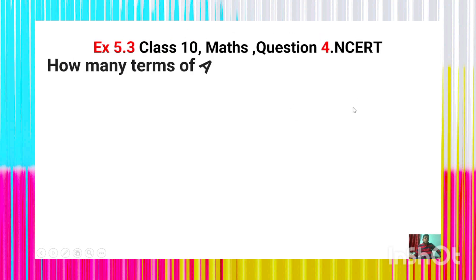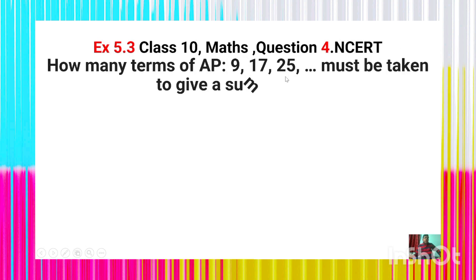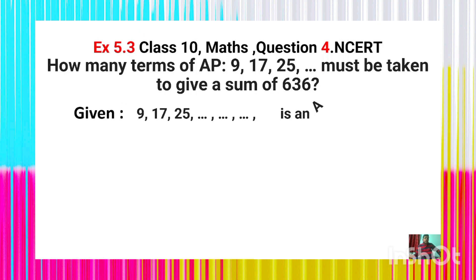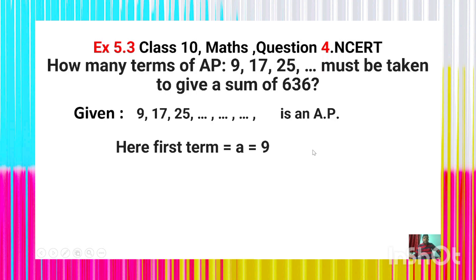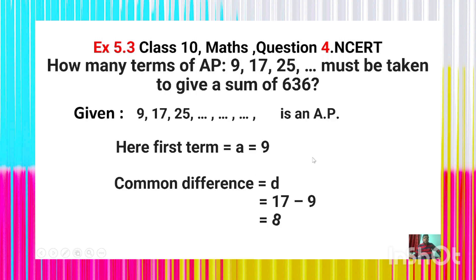The question from the book: how many terms of the AP 9, 17, 25 must be taken to give a sum of 636? Here is the solution. Given that 9, 17, 25 is an arithmetic progression. The first term of the AP is a = 9. The common difference d = a₂ − a₁ = 17 − 9 = 8.